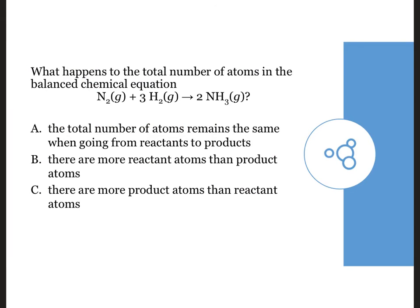All right, in this question, what happens to the total number of atoms in the balanced chemical equation? Because we did just balance this, coming up with 2 nitrogens plus 3 times 2 is 6 hydrogens, and so we have 8 atoms, if we're doing this one atom at a time, 8 moles of atoms on one side, and then 2 nitrogens plus 2 times 3 gives us 6 hydrogen, again, 8 atoms on the product side.